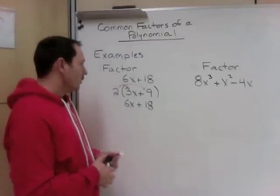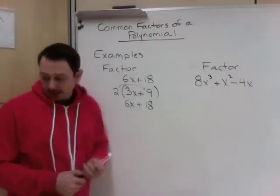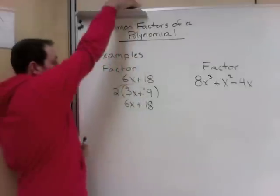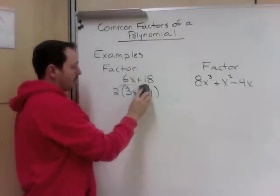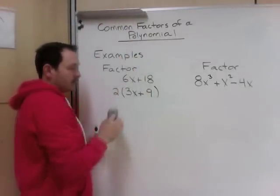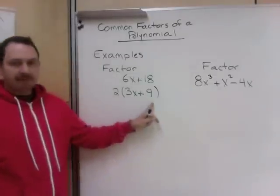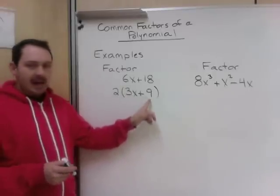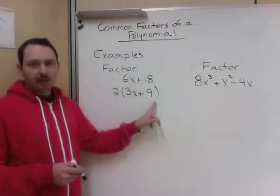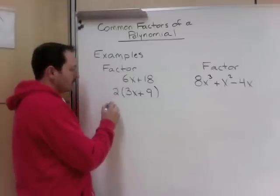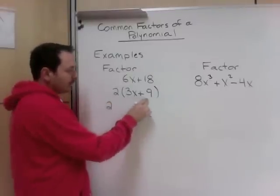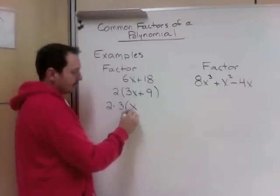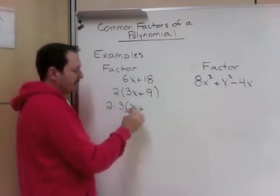Now with this, we know we factored correctly, but did we factor it completely? Is 3x plus 9 factored completely, or is there something still in there that's in common? And there is 3 and 9, they divide by 3. So I can take more out. So I could start with my 2 again. Now if I take 3 out of both of these, I have 3, 3x divided by 3 left me with x, 9 divided by 3 left me with 3.